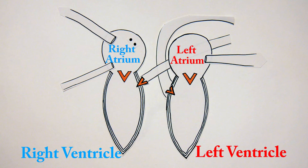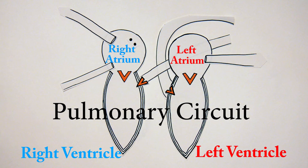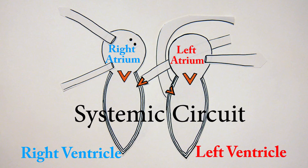Now it's time to annotate and define. When discussing the heart, you also have to mention the two types of circuits involved in blood flow. One is the pulmonary circuit, which sends deoxygenated blood from the heart to the lungs — shown in blue. The other is the systemic circuit, which sends oxygenated blood from the heart to the rest of the body — shown in red.